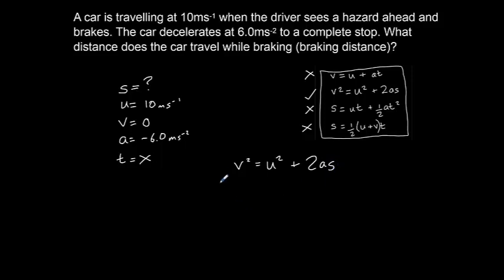Now we need to rearrange this. So if we subtract U squared from both sides, get V squared minus U squared equals 2AS. And we want S to be the subject here. So we can now divide both sides by 2A, and that will leave us with S equals V squared minus U squared divided by 2A. So let's plug our values in. V is 0, so we can begin with 0 squared, take away U which is 10, so 10 squared, divided by 2 multiplied by our acceleration here, which is minus 6.0. And if we work that out on our calculator, we get an answer of 8.33 metres.